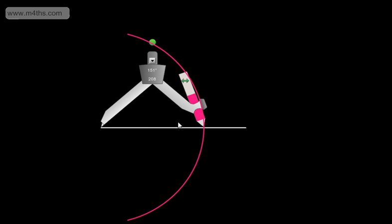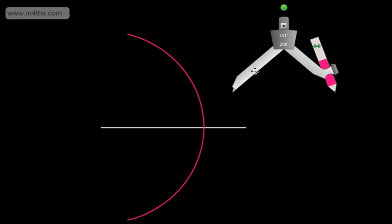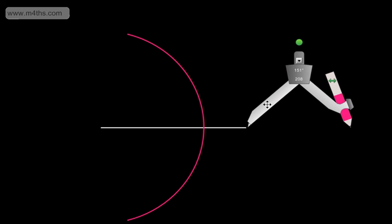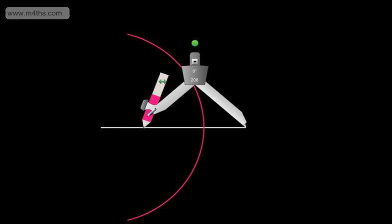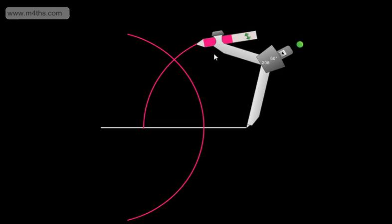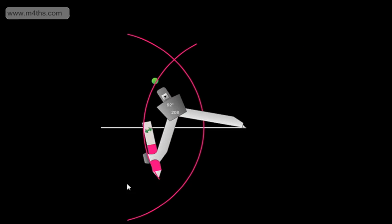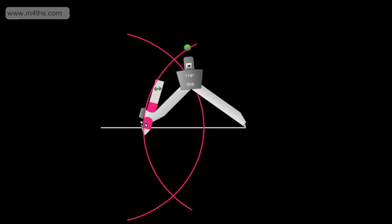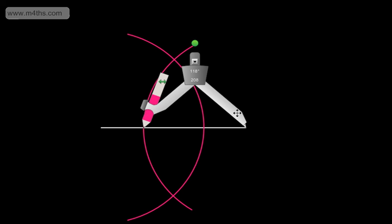Without changing the distance between the sharp end and the pencil, we pick the compass up and move the sharp end to the other end of the original line. What I'm now going to do is swing the arc back up and then back round. At no point have I changed the distance between the pencil and the sharp end.